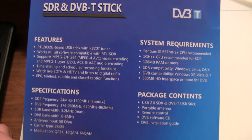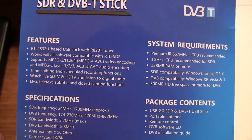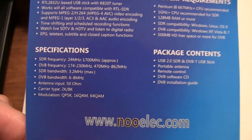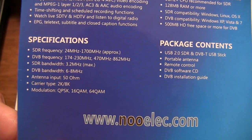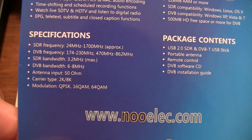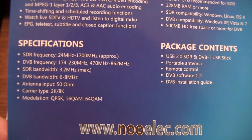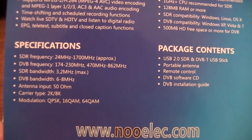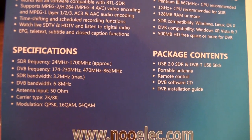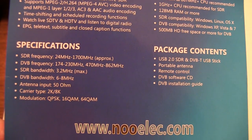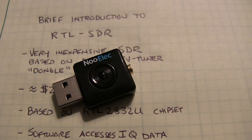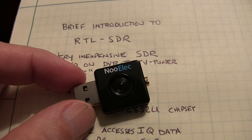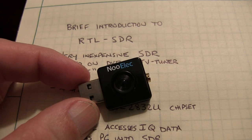Looking at some of the specs here: it's an RTL-2832-based USB stick. It covers a frequency range from 24 MHz to 1.7 GHz approximately, and it has an SDR bandwidth of 3.2 MHz. That means the IQ data generated internally will support up to a 3.2 MHz channel, within which we can do all kinds of reception with the various software that's out there. This unit comes with the USB stick and drivers for the digital video broadcast application, but you don't really use those if you just want to do SDR.